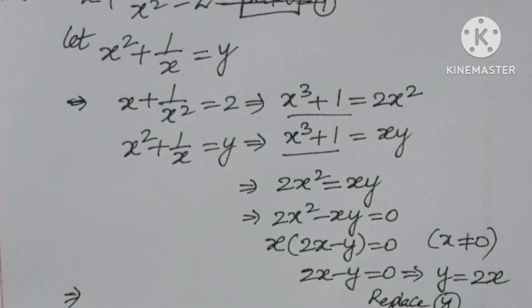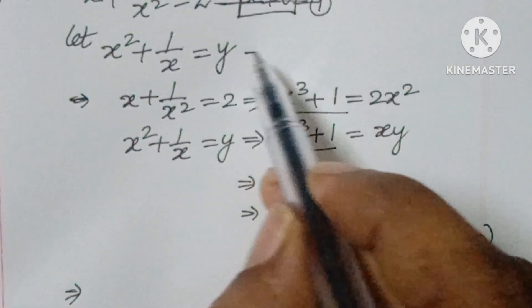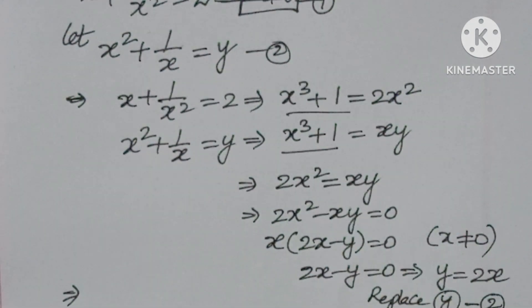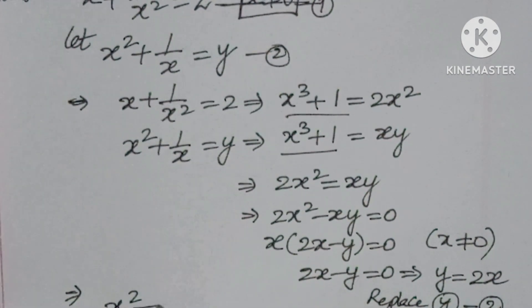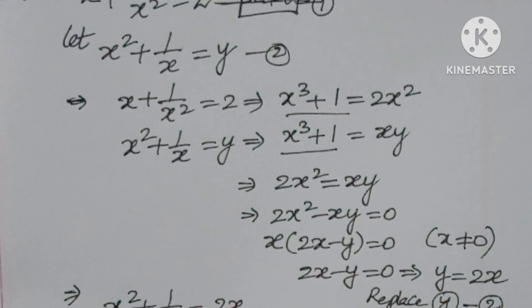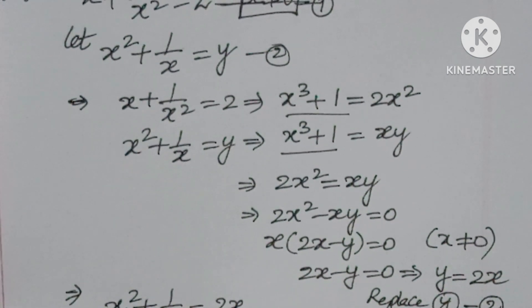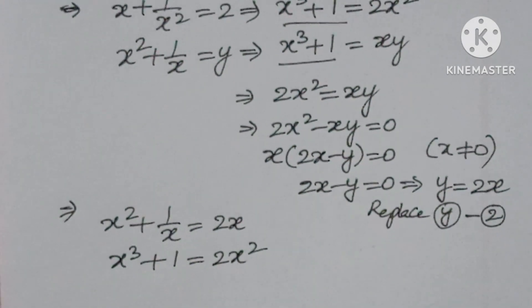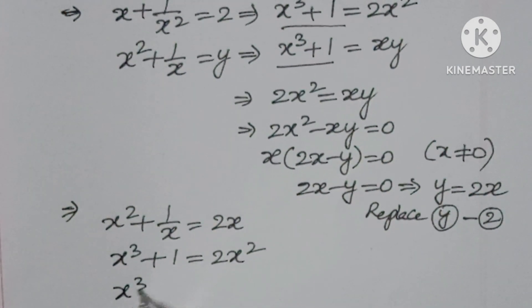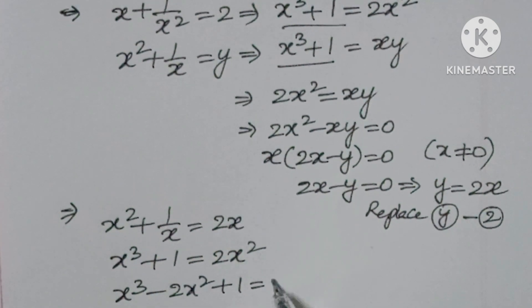Factoring out x gives x times (2x minus y) equals 0. Since x is not zero, we get y equals 2x. Substituting y equals 2x into the second equation: x squared plus 1 by x equals 2x, so x cubed plus 1 equals 2x squared, giving x cubed minus 2x squared plus 1 equals 0.